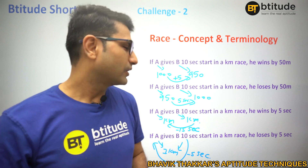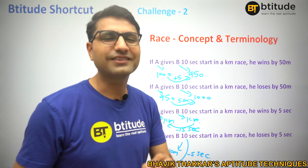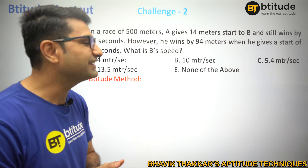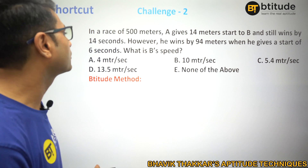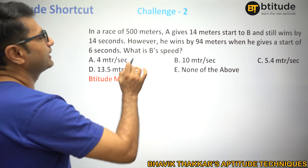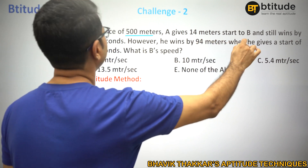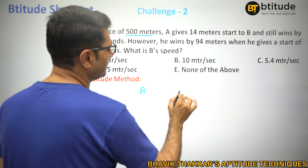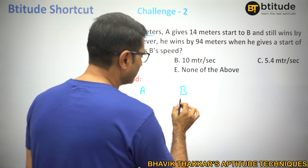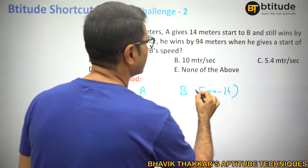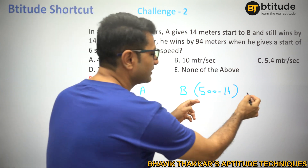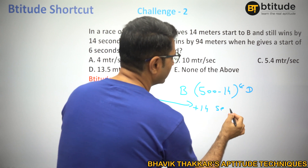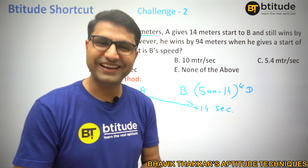Now let's move to the actual question. You can pause and try it on your own first. The question says: in a race of 500 meters, A gives B a 14 meter start and still wins by 14 seconds. This means A runs the full 500 meters. B, getting a 14 meter start, ran only 500 minus 14 = 486 meters. And B lost by 14 seconds, meaning for that distance B took 14 seconds more than A.